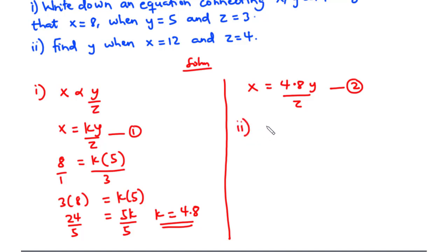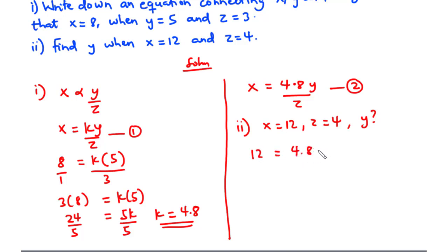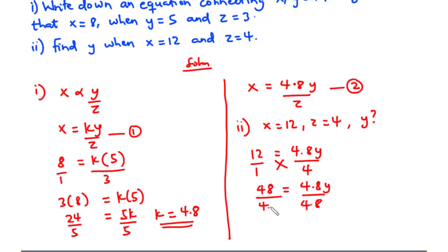Now let's find y when x is 12 and z is 4. Substituting into equation 2, we have 12 equals 4.8 times y divided by 4. Cross multiplying gives 4 times 12 equals 48, so 48 equals 4.8 times y. Dividing both sides by 4.8, we get y equal to 10.